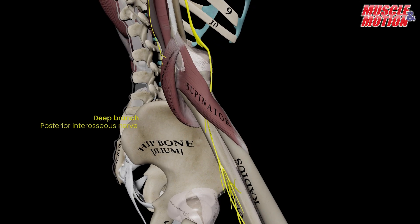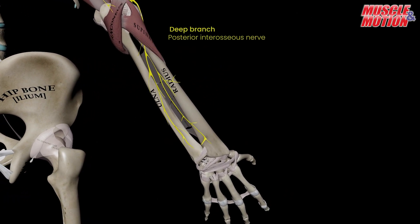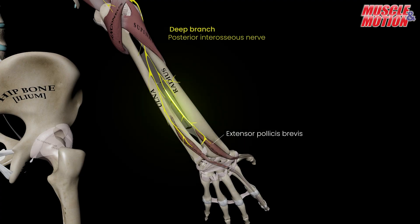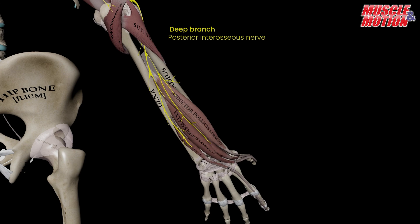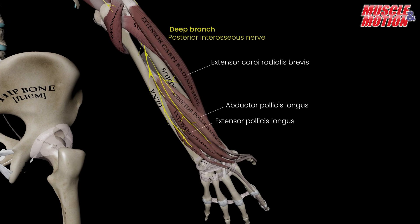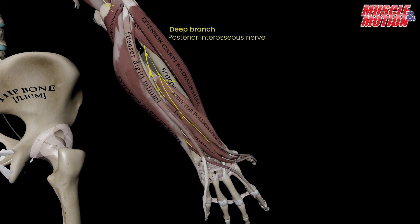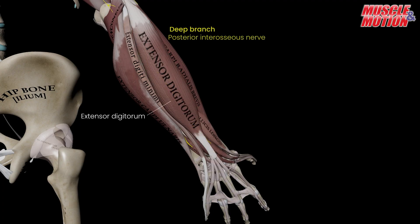From there, it continues distally to supply all the extensor muscles of the forearm, including the extensor pollicis brevis, extensor indicis, extensor pollicis longus, extensor carpi radialis brevis, extensor carpi ulnaris, extensor digiti minimi, and the extensor digitorum.